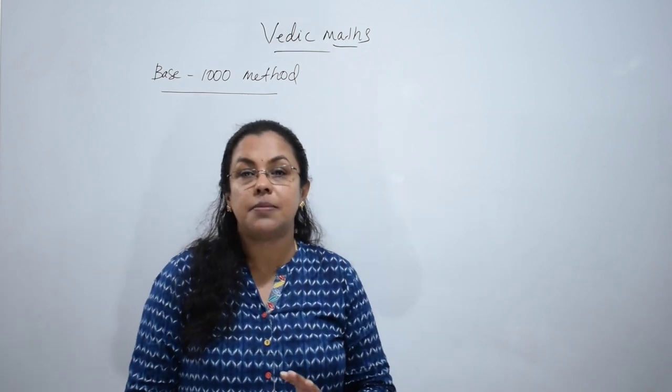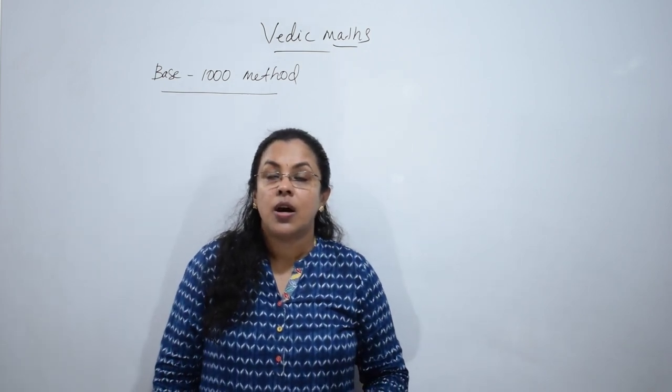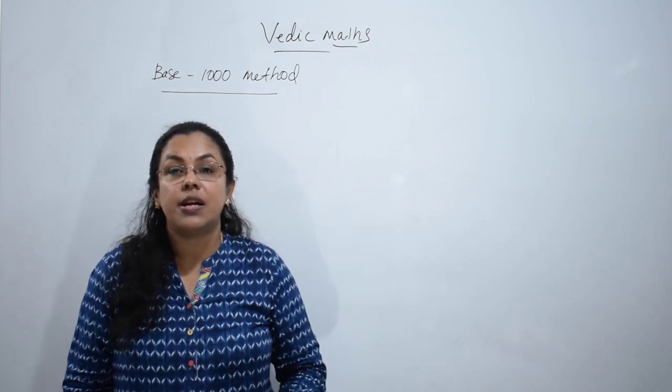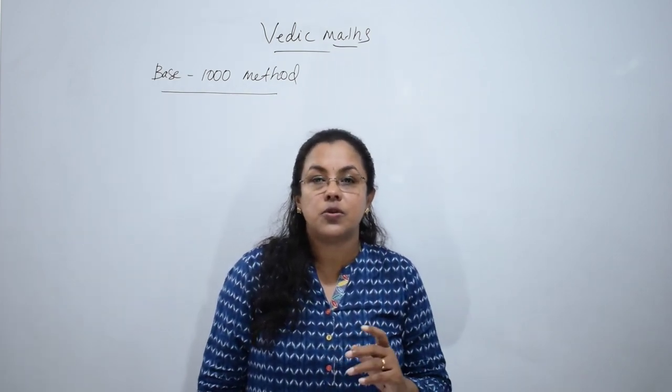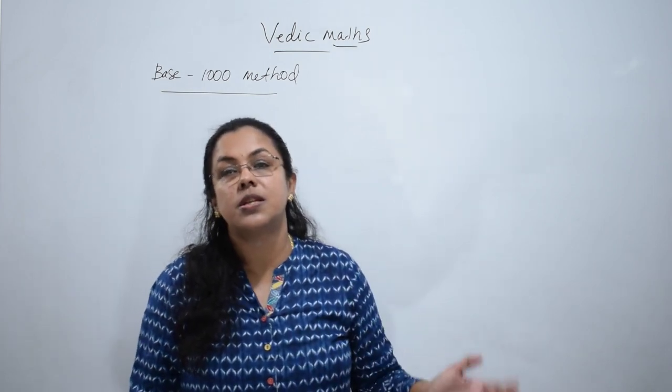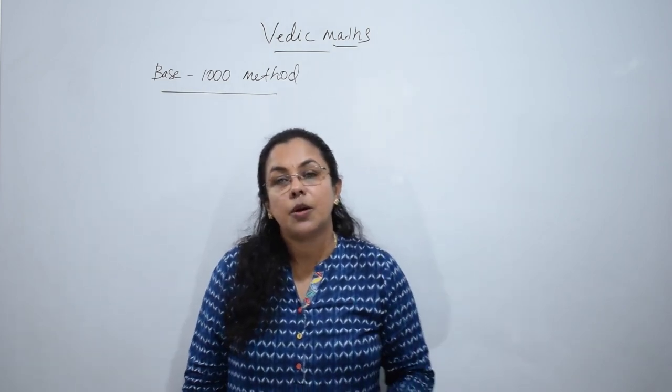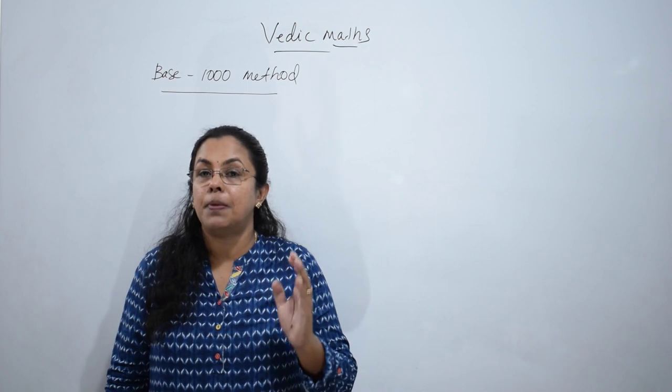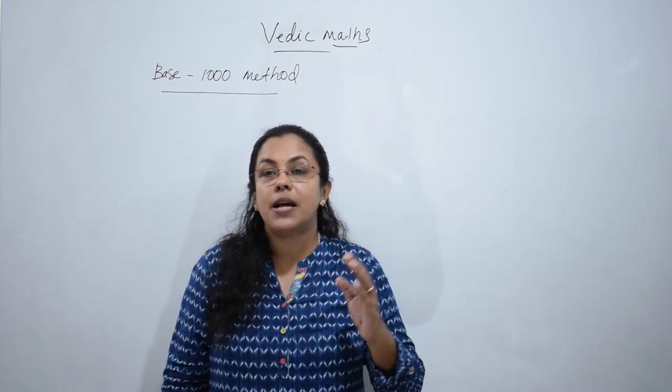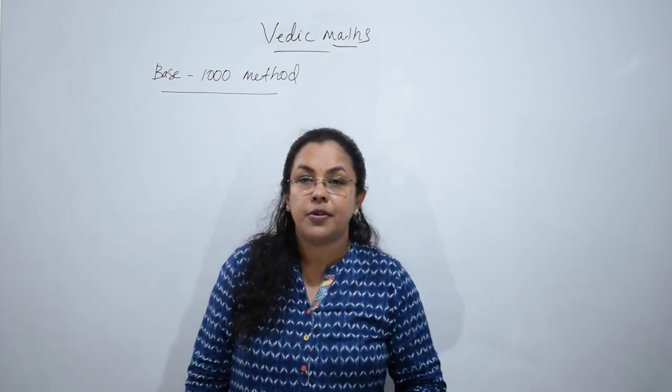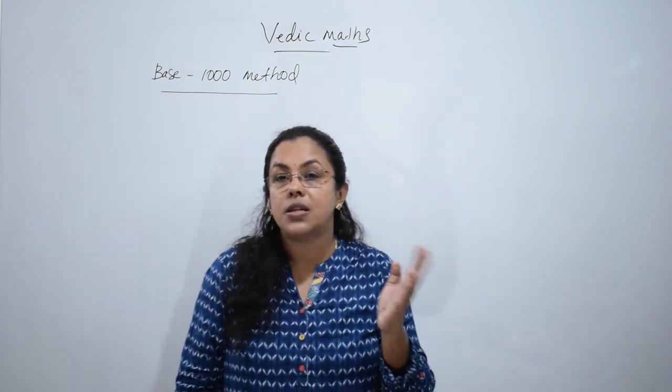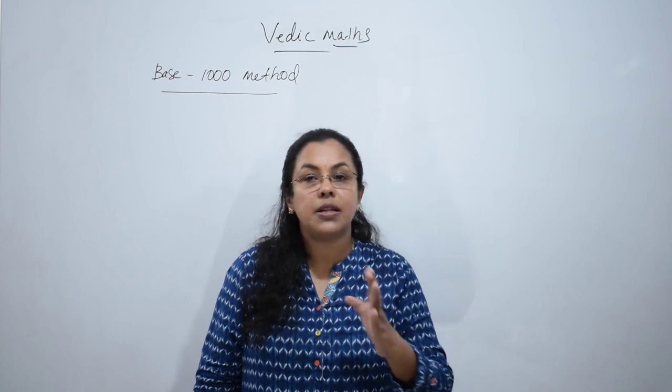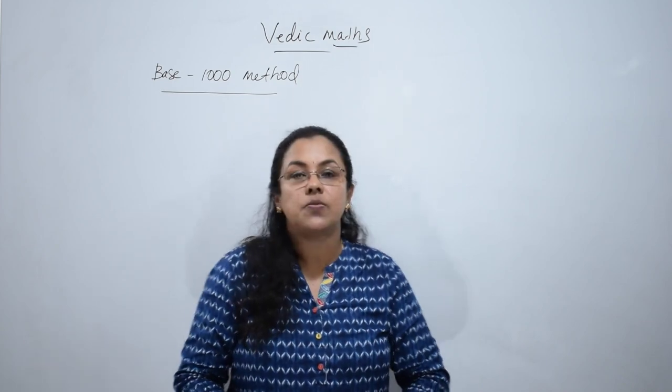This is Vedic 1000 method, a continuation of 3-digit multiplication. Before watching this video, please watch Vedic Maths part 4 and part 5, where I explain how to multiply 2 numbers near to 100. The method is the same.